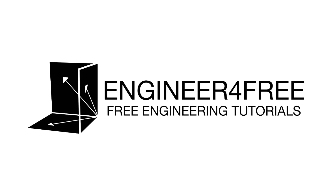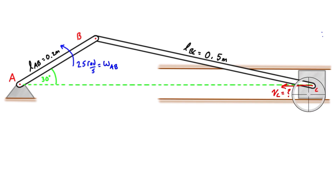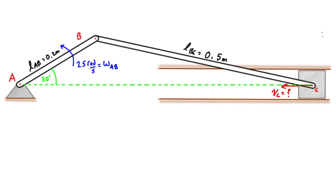Welcome back. We're looking at the same crankshaft as the last video and going to apply relative motion analysis to find the velocity of point C. This time we're going to do a scalar analysis — it's simplified compared to the vector analysis but very similar, as both are relative motion. If you watched the last video, I talked more about the mechanics of how this works. A link is in the top right corner.